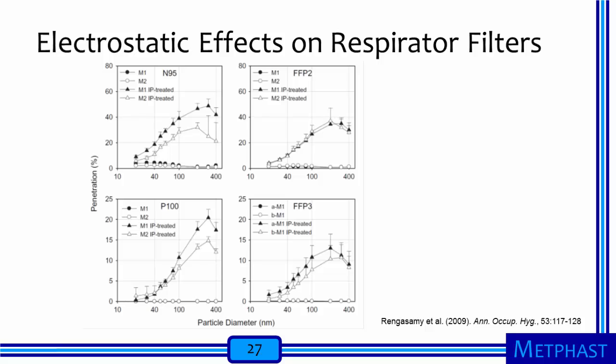The effects of electrostatic enhancement on filter efficiency can be substantial when considering particles with an equilibrium charge distribution. Graphs from Rangasamy and co-authors show penetration through respirator filters as a function of particle size. The authors measured penetration for various electrostatic respirator filters, then rinsed the filters with isopropyl alcohol to remove the charges. In each of the four figures, the two higher curves are for discharged filters, while the lower curves are for the charged filters — showing that filters carrying electrostatic charge have much lower penetration and much higher efficiency. While electrostatic charging effects are more pronounced for particles larger than 100 nanometers, the improved capture is still very significant for many nanoparticles.